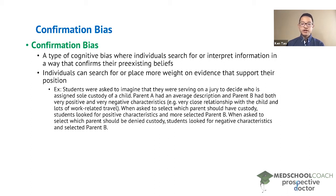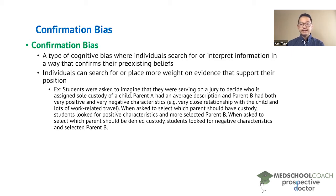Next, the experimenters separated students into groups and asked them different questions. The students asked which parent should have custody looked for positive characteristics and more of them selected Parent B, because Parent B had the positive characteristic of a very close relationship with the child. Some students were asked which parent should be denied custody. Here, students looked for negative characteristics, and more selected Parent B, because Parent B had the negative characteristic of lots of work-related travel.